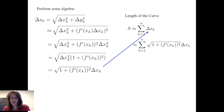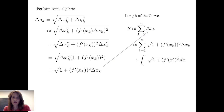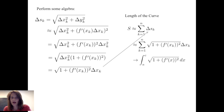Summing those pieces from 1 to n and letting the norm of the partition — the width of the widest sub-interval — go to zero, that Riemann sum converges to the definite integral from a to c of √(1 + [f′(x)]²) dx. Since I partitioned the interval with x between a and c, a and c become the limits of integration. Alternatively, this integral can be written as the integral from a to c of √(1 + (dy/dx)²) dx.